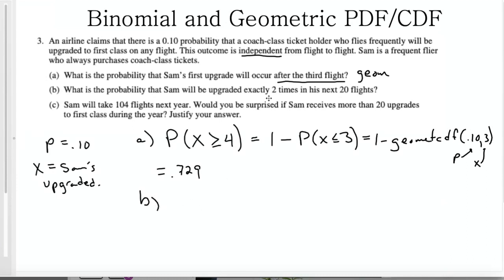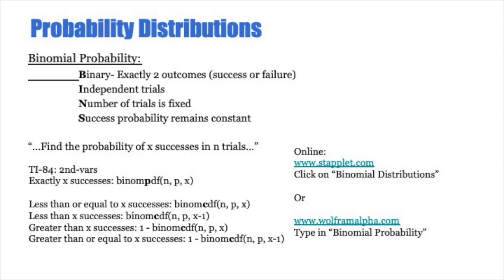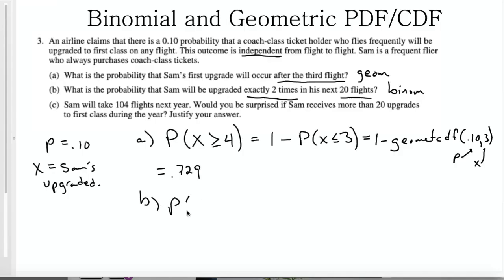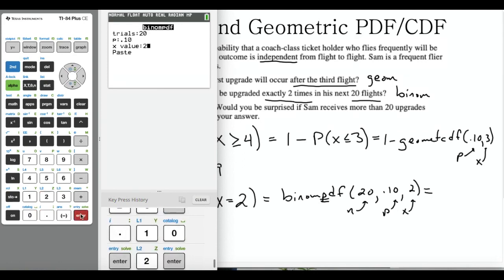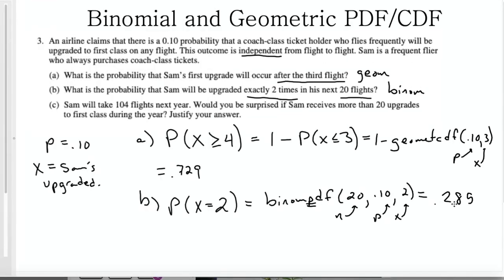Okay, part b is asking us the probability that Sam will be upgraded exactly two times in the next 20. This is binomial probability because they give us a fixed number of trials, a total number of trials. So we want the probability of exactly two in the next 20. So this is going to be binome PDF. P stands for probability. C stands for cumulative. And we have three pieces of information to enter. N, the total number of trials. P, the probability of success. And X, the specific endpoint. So let's enter that into the calculator. We're going to go to second VARS and find binome PDF. Enter the information and we get 0.2852, 0.285 to the nearest thousandth.